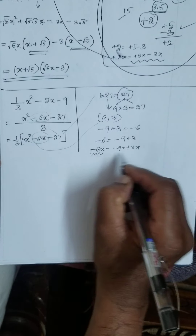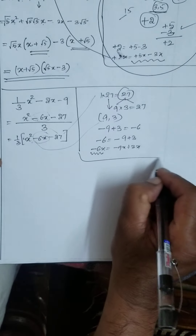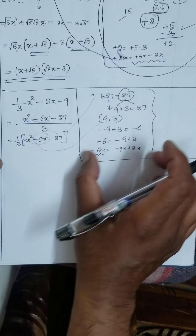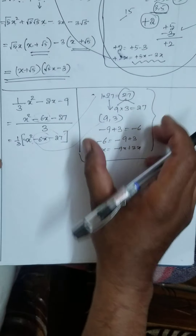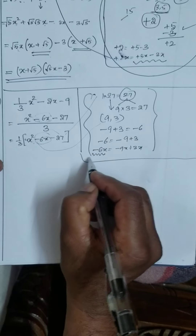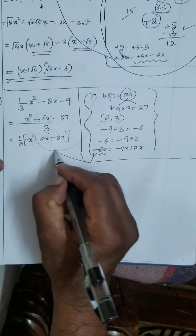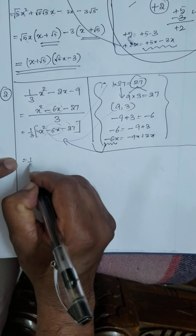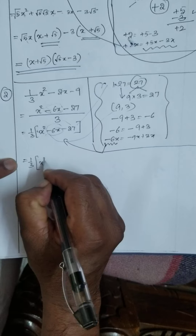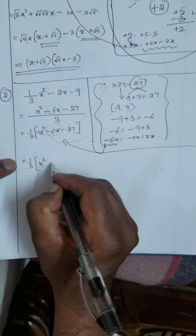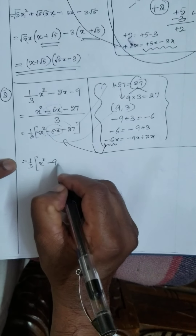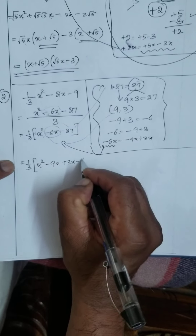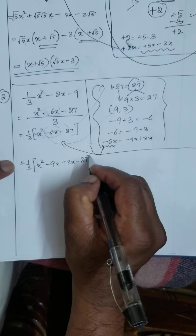Minus 6x can be written as this. All these things should be in your mind — mental calculations. This involves a lot of mental calculations. Therefore I put here: 1/3 · (x² minus 6x) can be written as: minus 9x plus 3x minus 27.